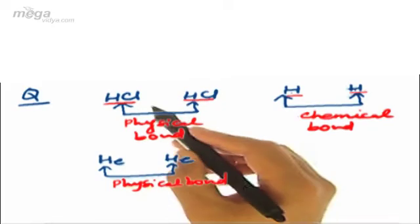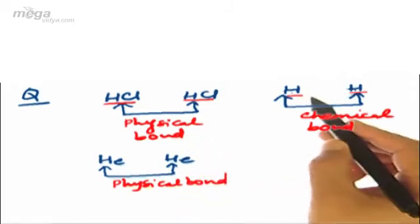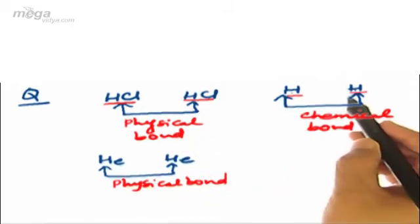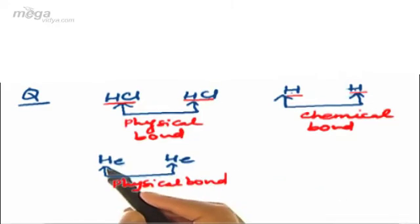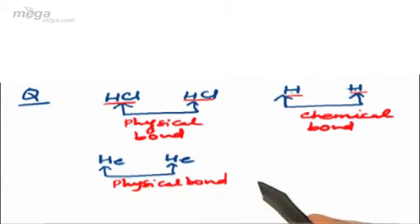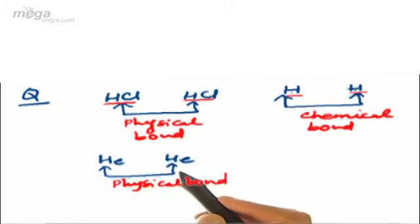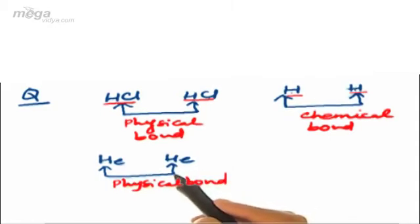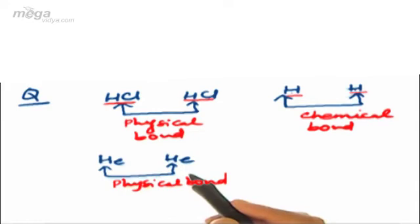We can conclude that in case of two molecules, the bonding will be physical. In case of two species in the atomic state, the bonding will be chemical. And in case of two atoms that are inert gases, the bond will again be physical. The reason is that inert gases — the 18th group elements — have a stable inert gas configuration, so they do not undergo any kind of electronic involvement during bonding.